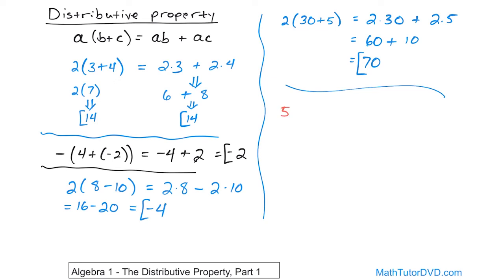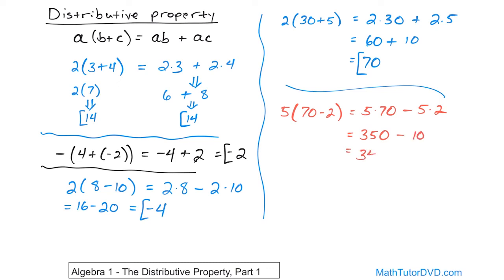What if you have five and on the inside seventy minus two? You can distribute in: five times seventy, the minus sign comes along for the ride from inside the parentheses, and then five times two. Multiplication comes before subtraction. Five times seventy — if you forget, five times seven is thirty-five, then add the extra zero from the seventy — so five times seventy is three hundred fifty. Then you subtract ten because five times two is ten. So you get three hundred forty, because three hundred fifty minus ten is three hundred forty.